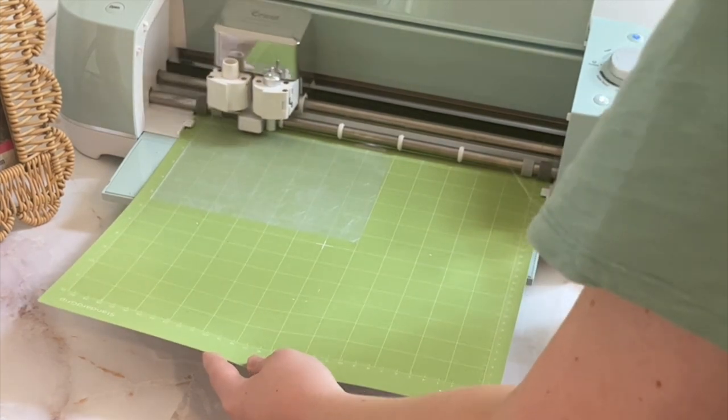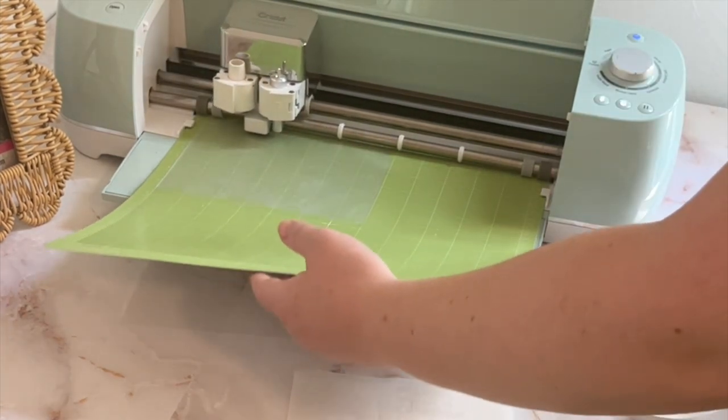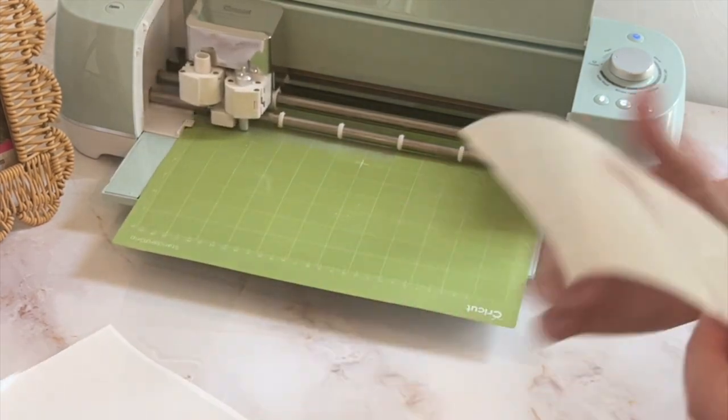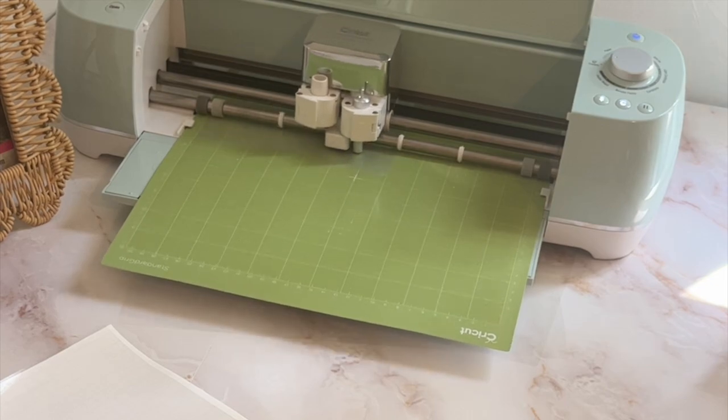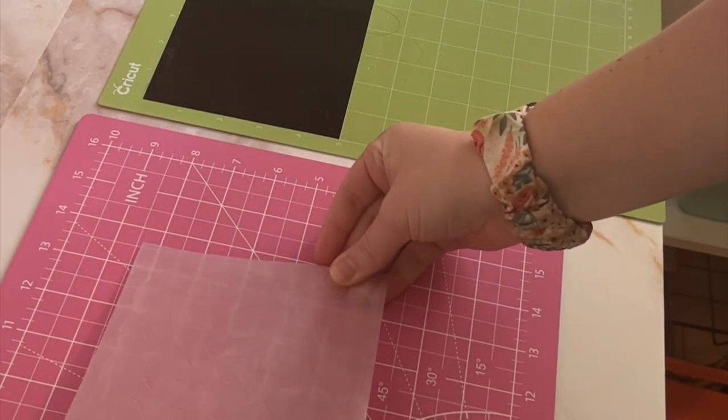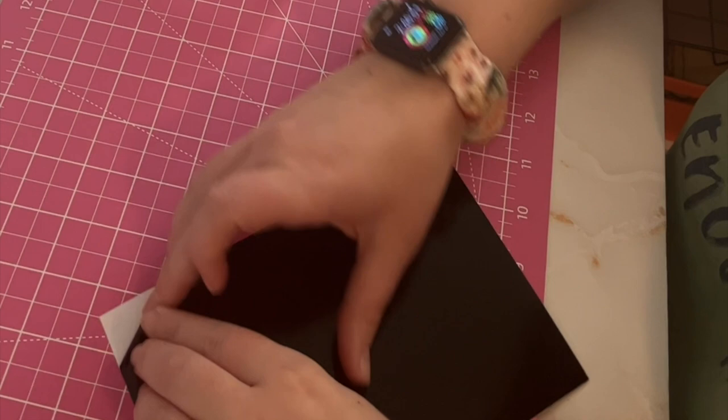And then you just cut everything like normal. There's actually a custom setting for window cling if you go to your cut settings when you're in Cricut Design Space. And so I did that and I actually cut it two or three times and that ensured that it cut all the way through.